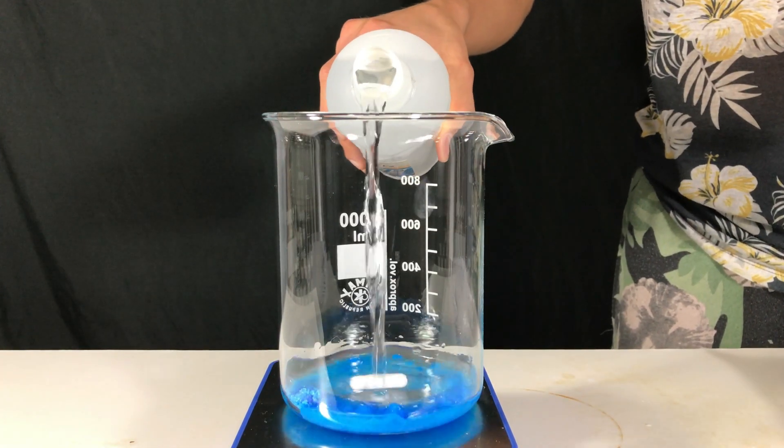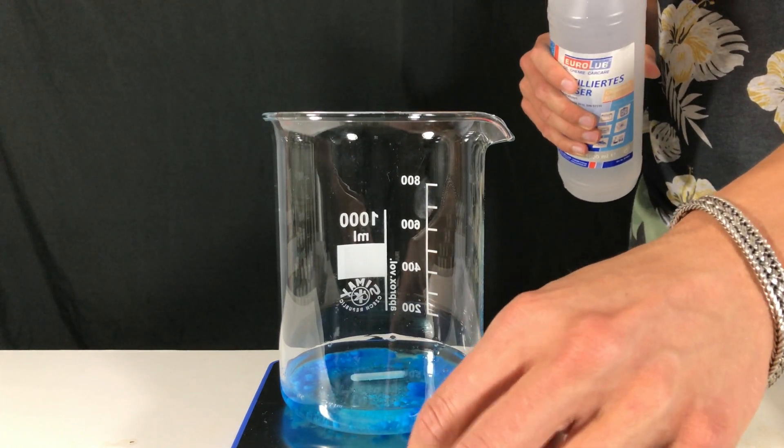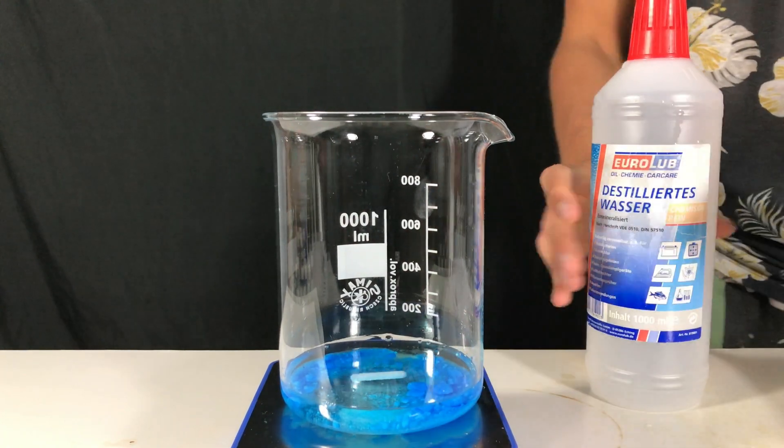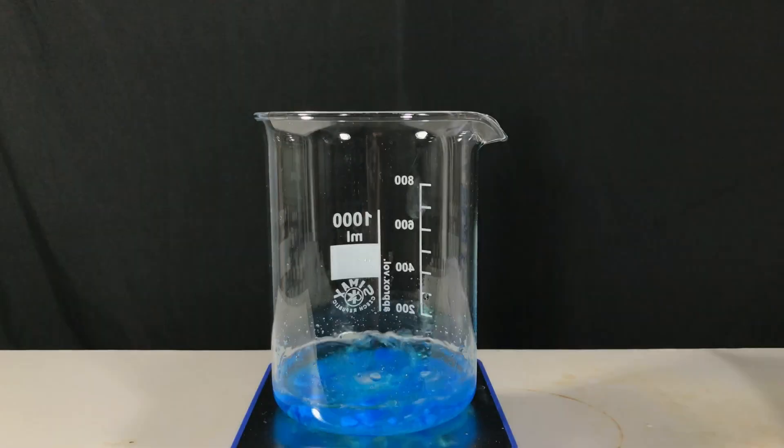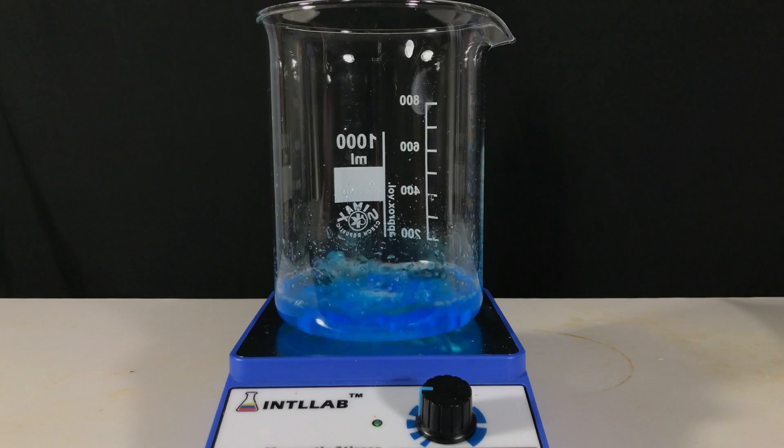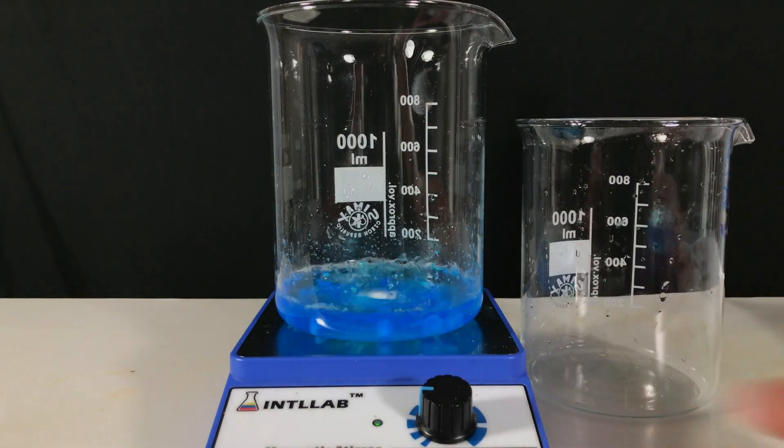Enough distilled water to dissolve all of the copper sulfate has to be added. While the copper sulfate is still dissolving we take a second beaker.